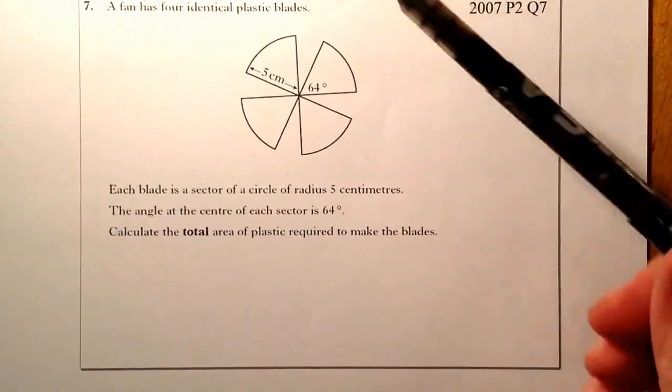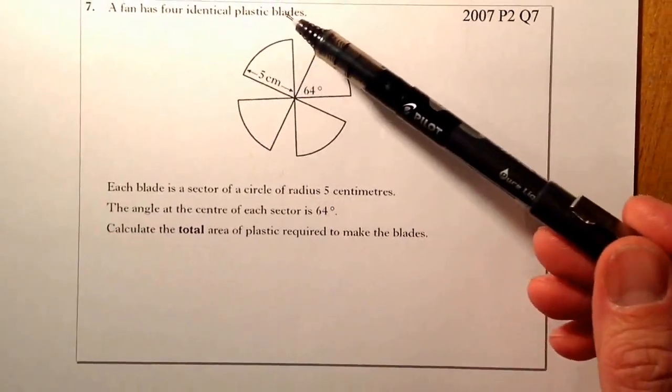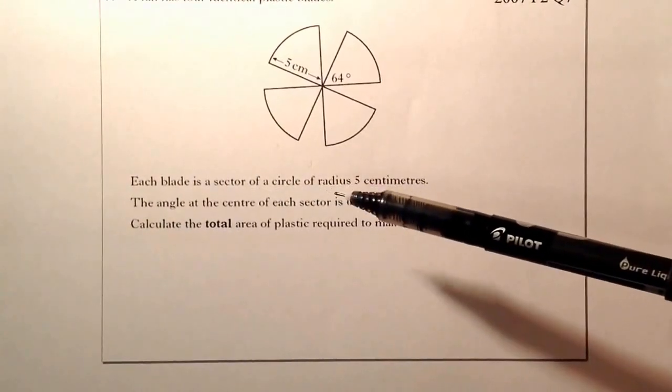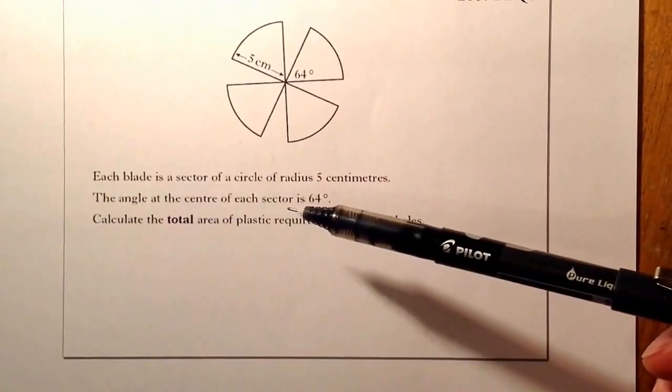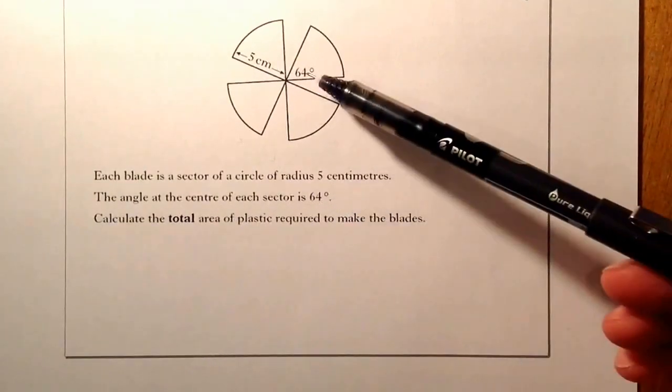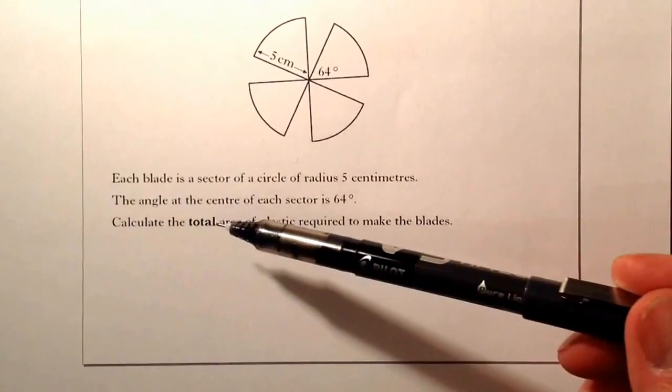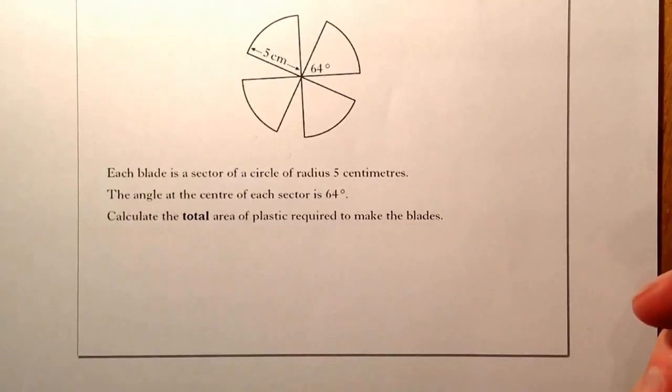Right, let's see what we've got to do here. A fan has four identical plastic blades. Each blade is a sector of a circle of radius 5 centimeters. The angle at the centre of each sector is 64 degrees. Calculate the total area of plastic required to make the blades.